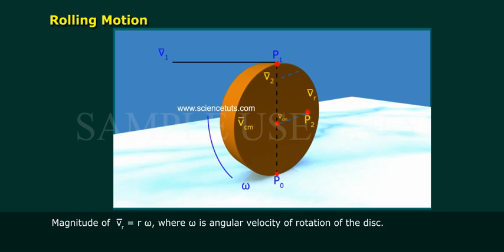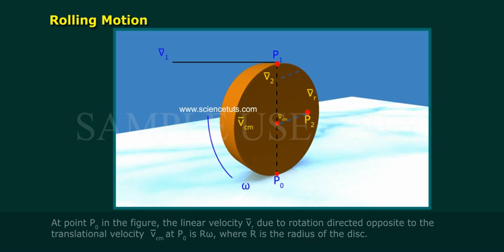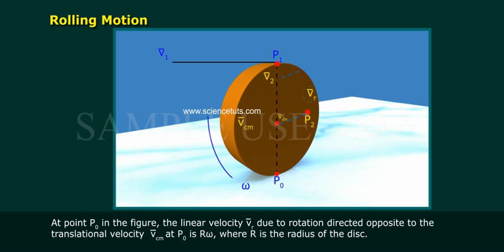At point P₀ in the figure, the linear velocity V₂ due to rotation is directed opposite to the translational velocity V_CM. At P₀ this is rω, where r is the radius of the disk.